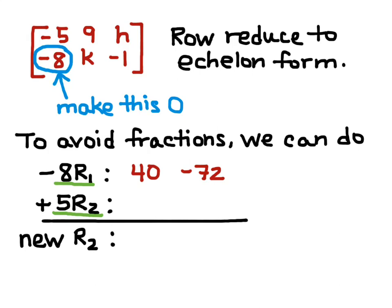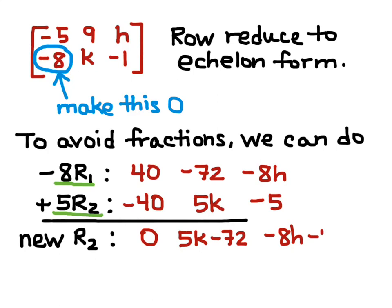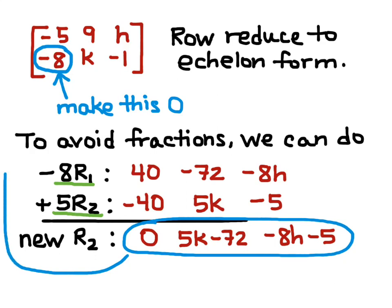So, multiplying each element of each row by the appropriate constant, I get for negative 8r1 I get 40, negative 72, negative 8h, and for 5r2 I get negative 40, 5k, and negative 5. Adding those together, I get my resulting new row 2, which I will replace in the matrix as my new R2.